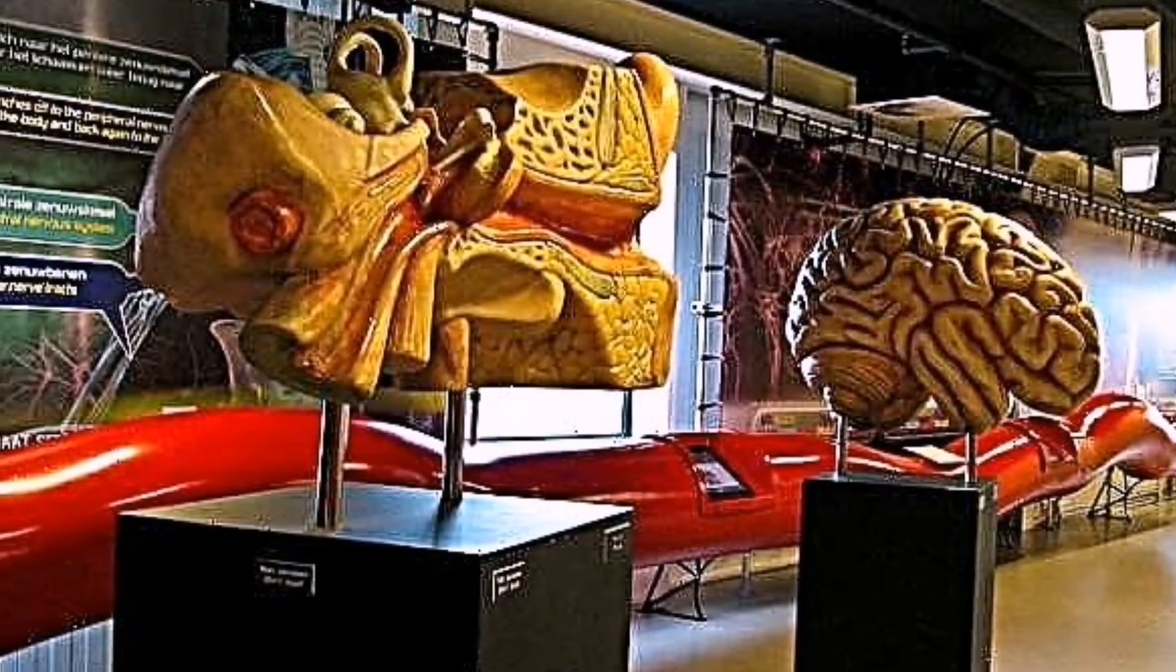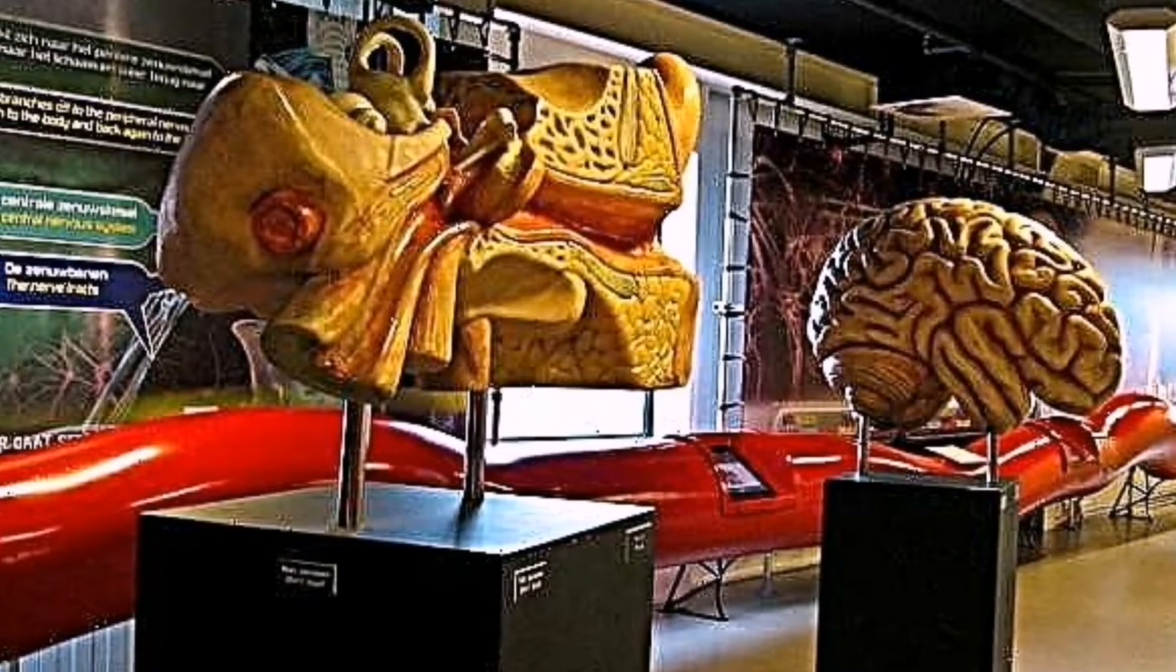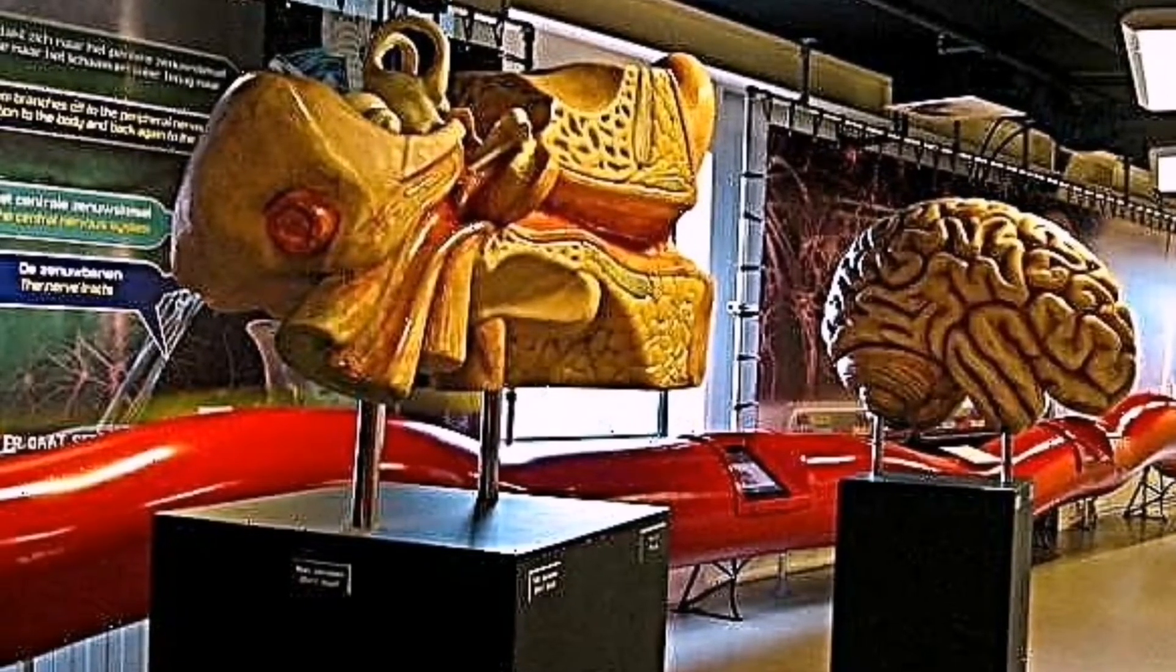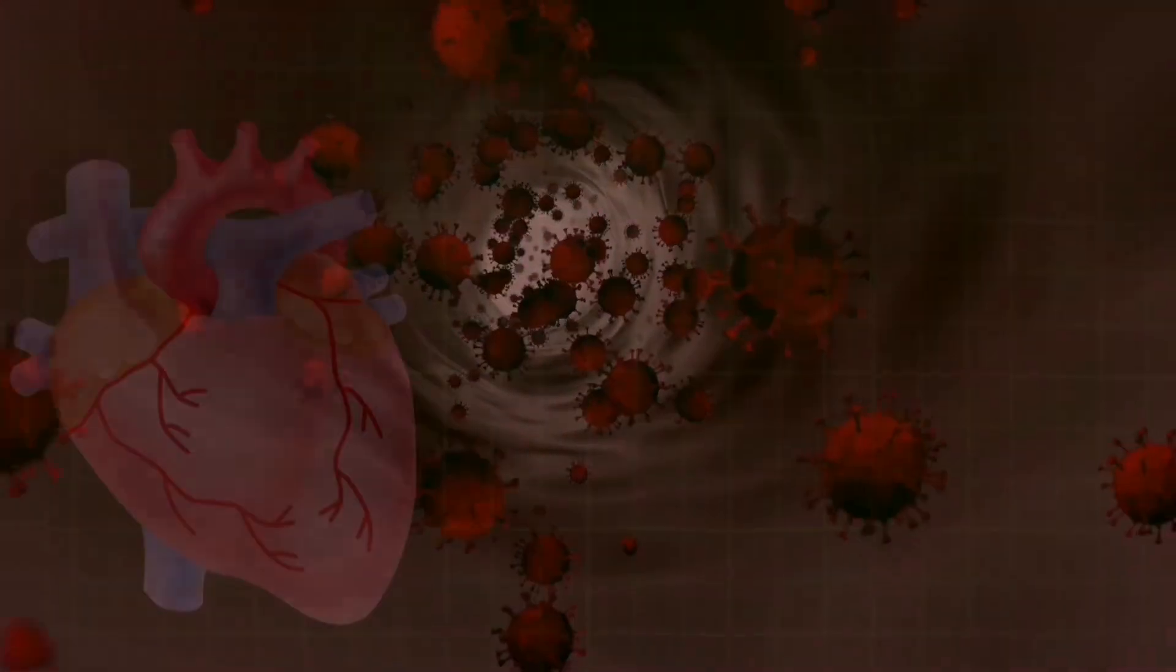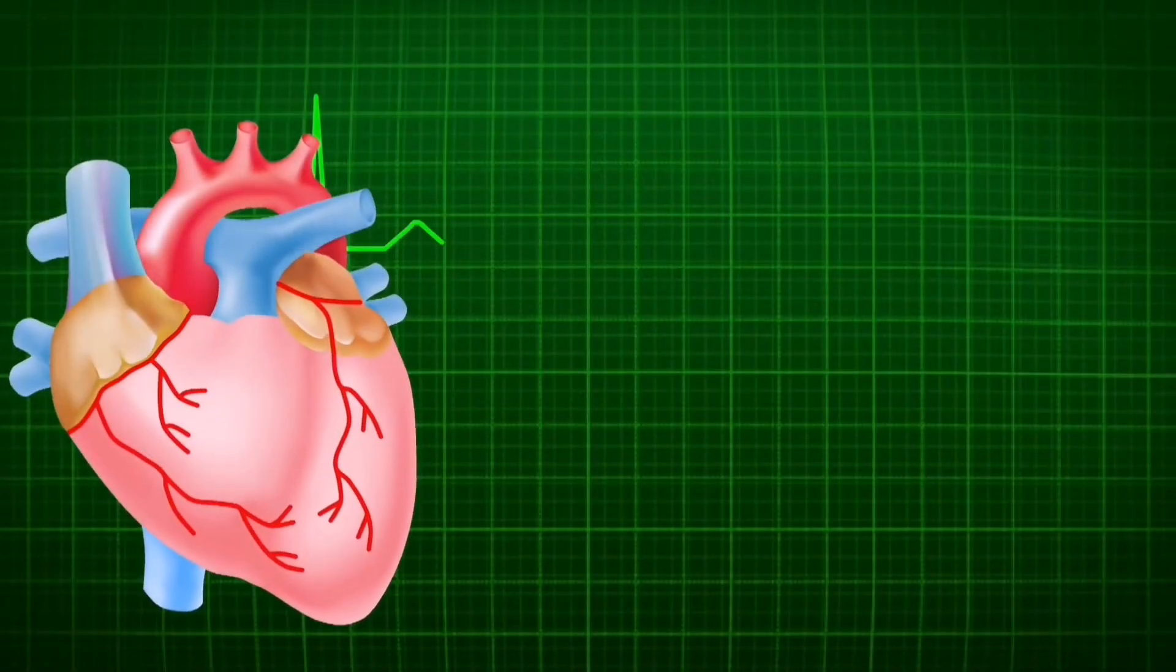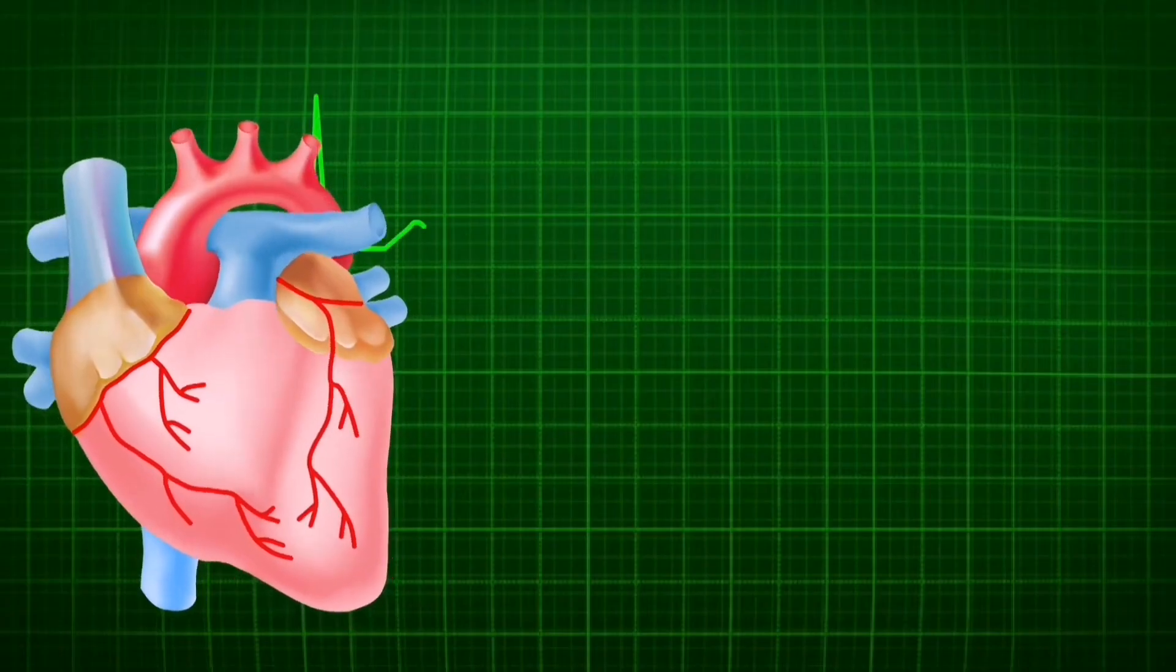On the way back down, there are more displays on health and diet and games, for instance one where players attempt to knock out bacteria on a big screen display by tossing beanbags at them. Other machines let visitors monitor their hearts while they exercise, or measure blood pressure, heart rate, and body mass index.